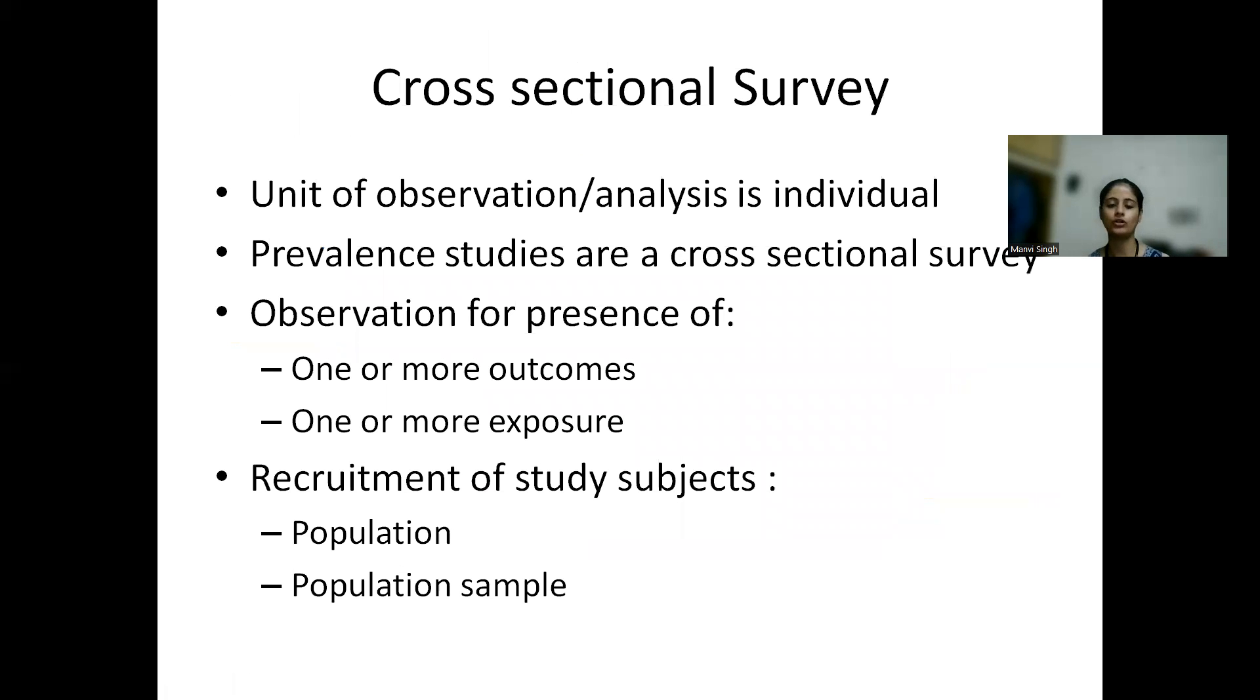The unit of observation in a cross-sectional survey is an individual. Prevalence studies are a type of cross-sectional survey. Observation can be done for more than one thing. You can observe for one or more outcomes, you can observe for one or more exposures simultaneously. This lends a component of analytical study design to this cross-sectional survey. Recruitment of study subjects can be either the entire population can be studied or a sample can be taken from the population and then that sample alone can be studied. This is to facilitate ease.